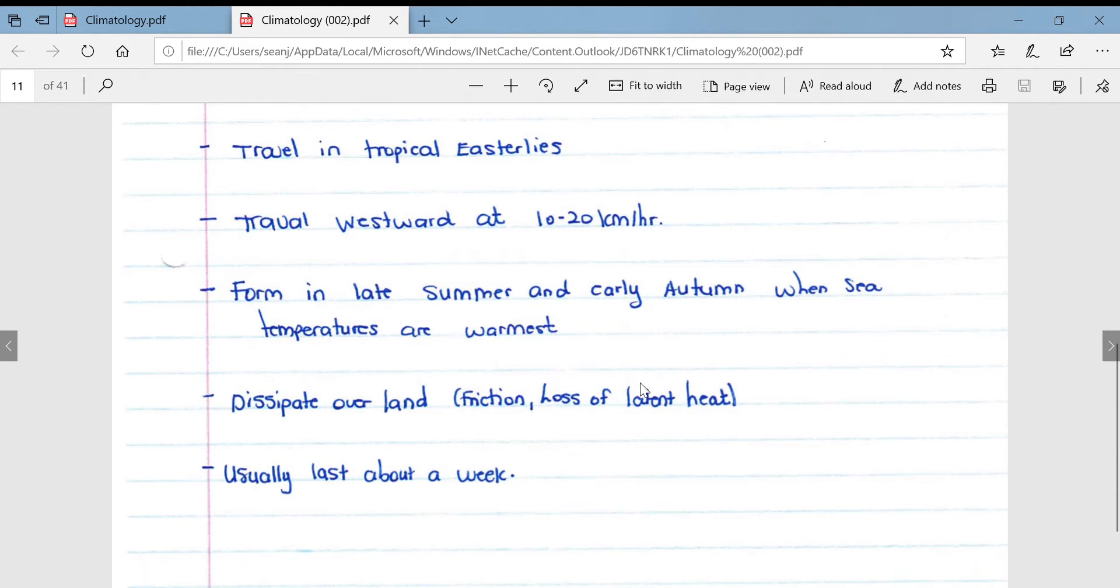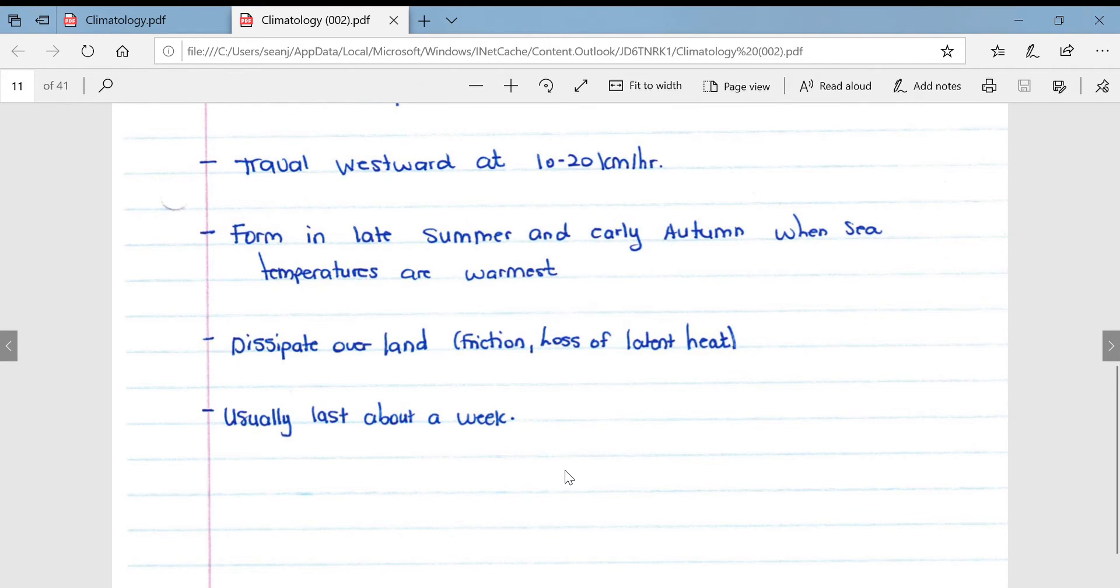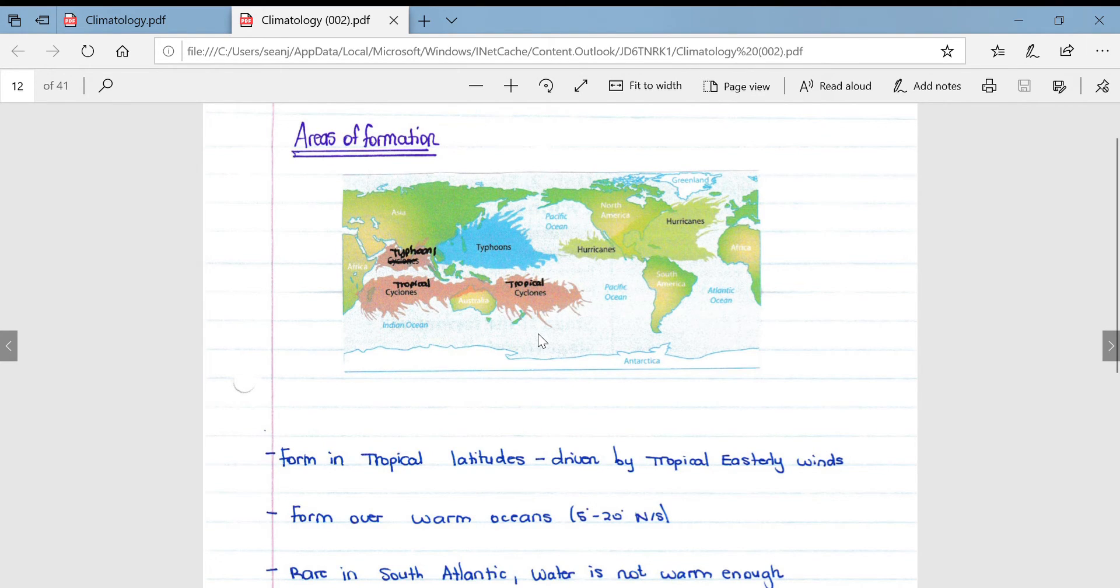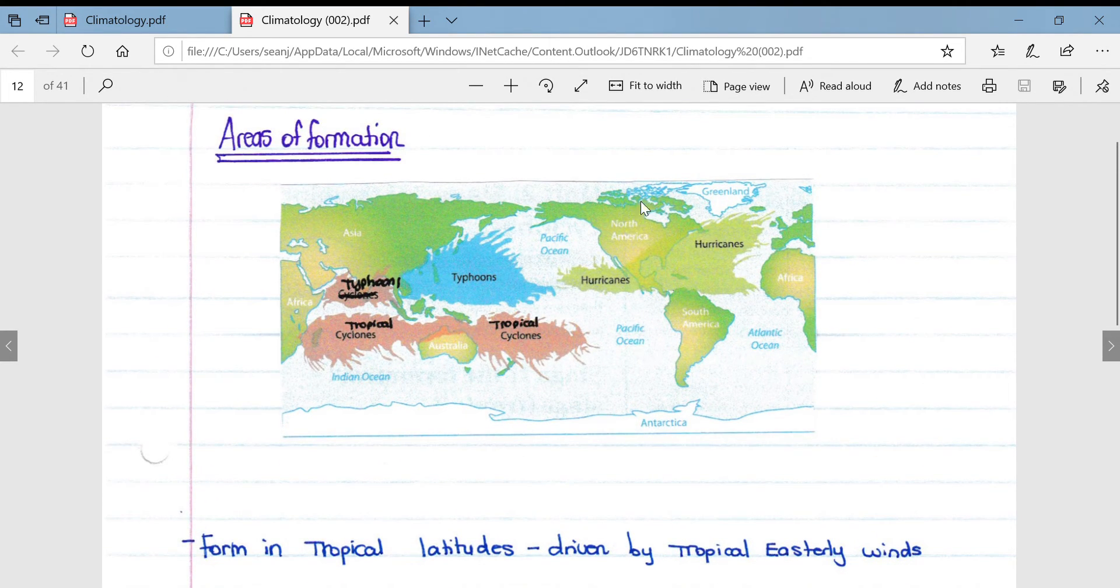They form in late summer and early autumn when sea temperatures are at their warmest. They dissipate when in contact with the land due to the friction that the land poses as well as the loss of latent heat. We'll get into these terms a little later. And they usually last for about a week.